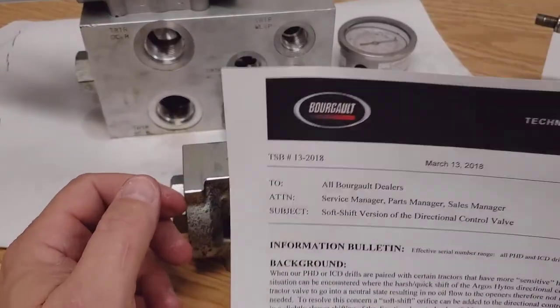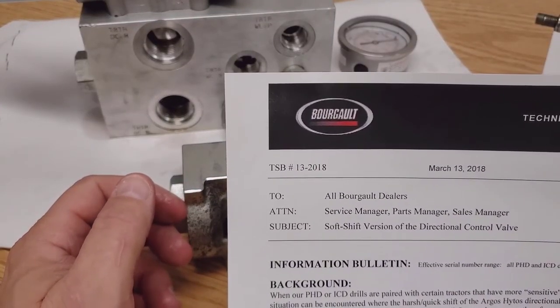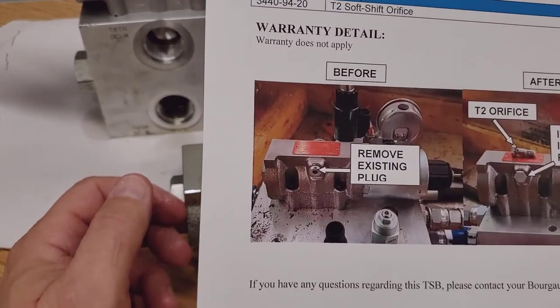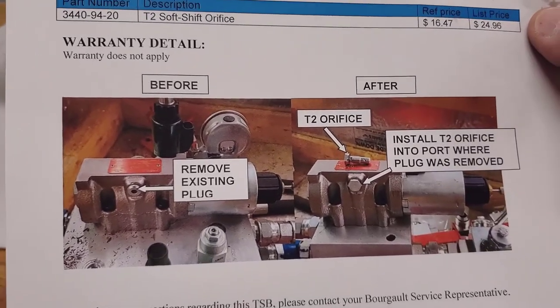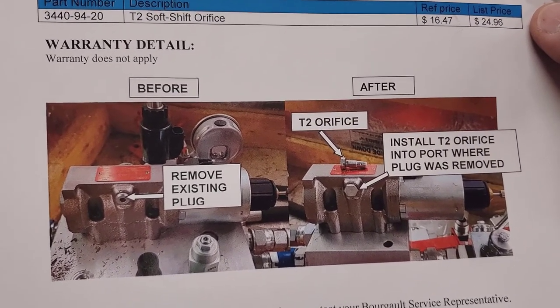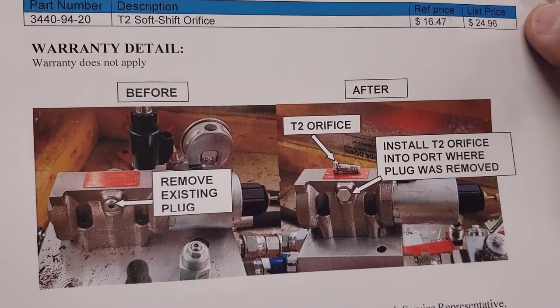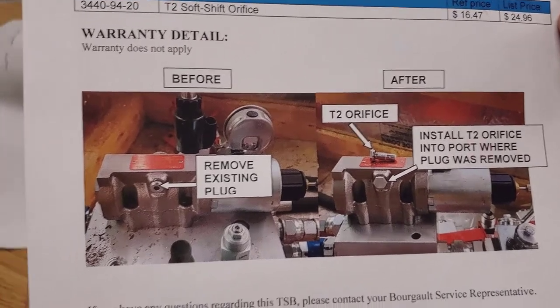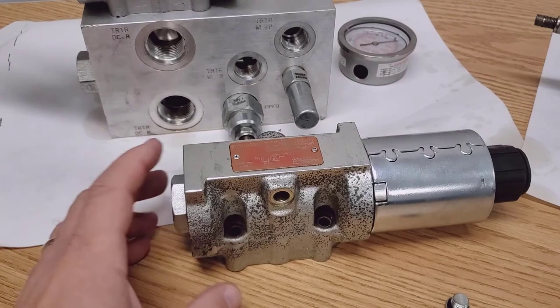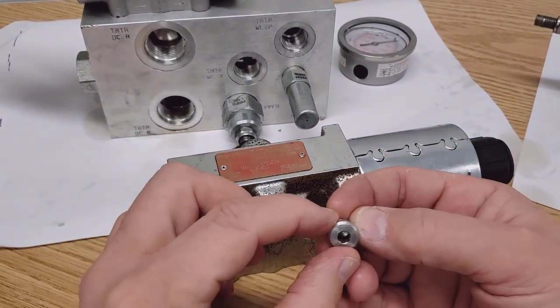And install an orifice fitting to allow a bit of the pressured oil to bleed off. We released the bulletin number TSB 13 of 2018, showing removing the existing plug. And it shows what it looks like when it has the orifice installed. You can see by the image that it has a hex nut type orifice, where the existing plug had this little Allen head plug.